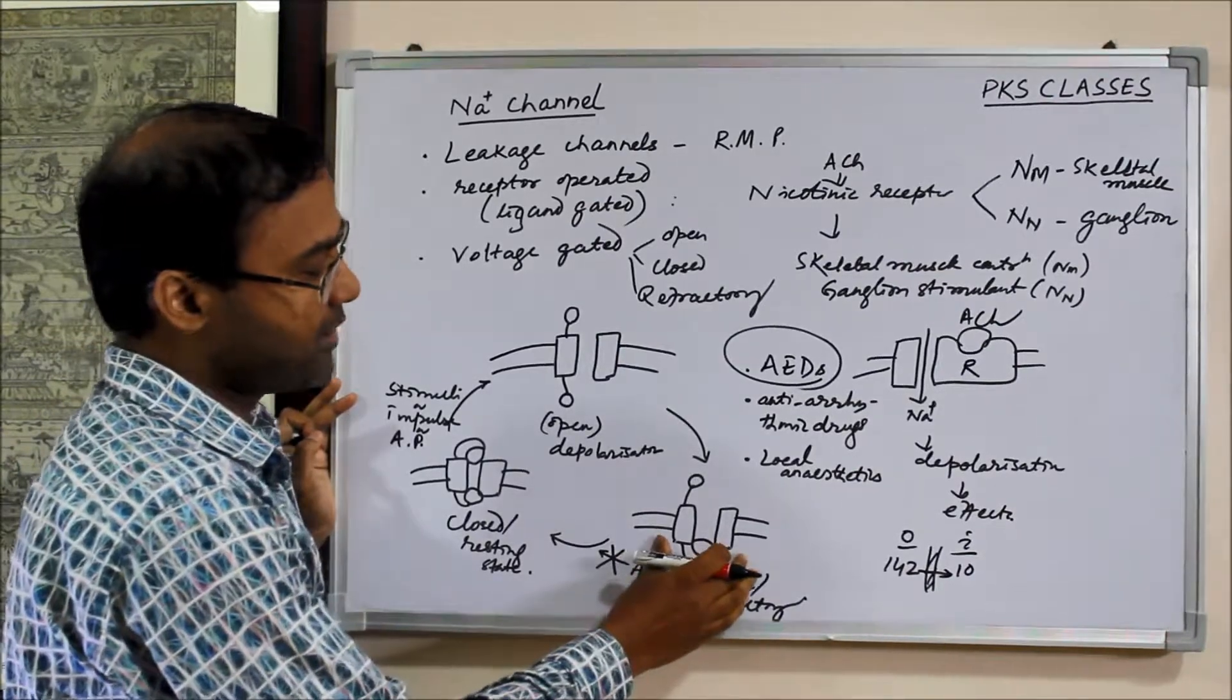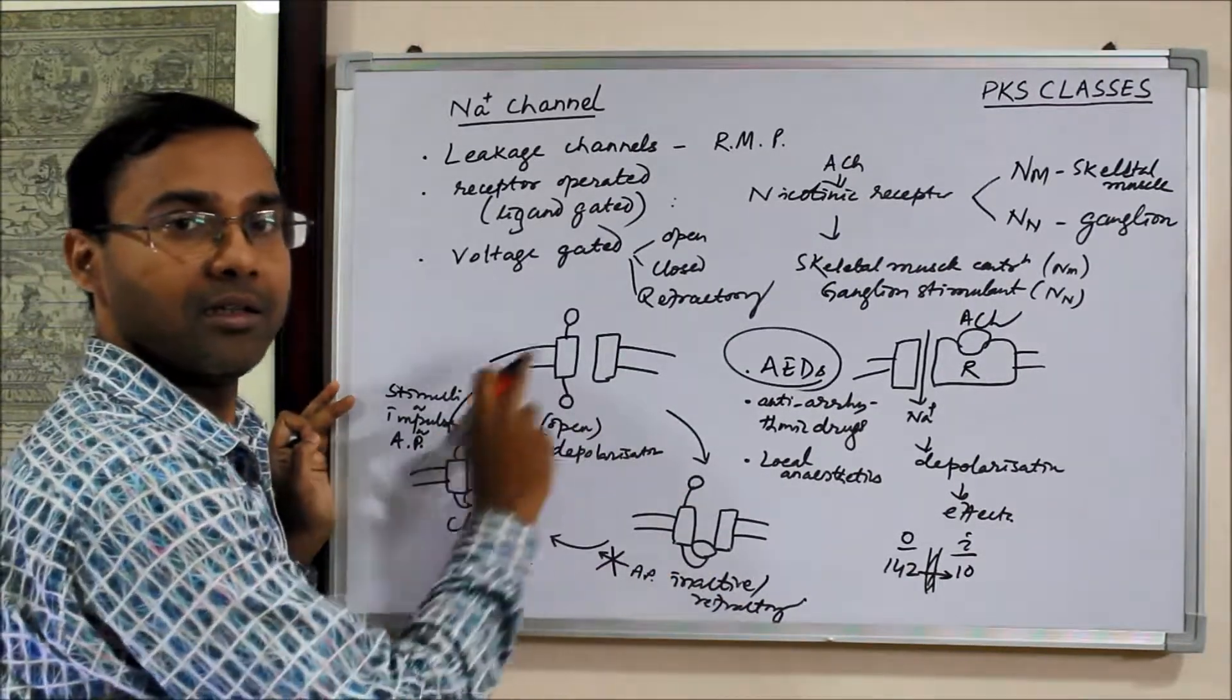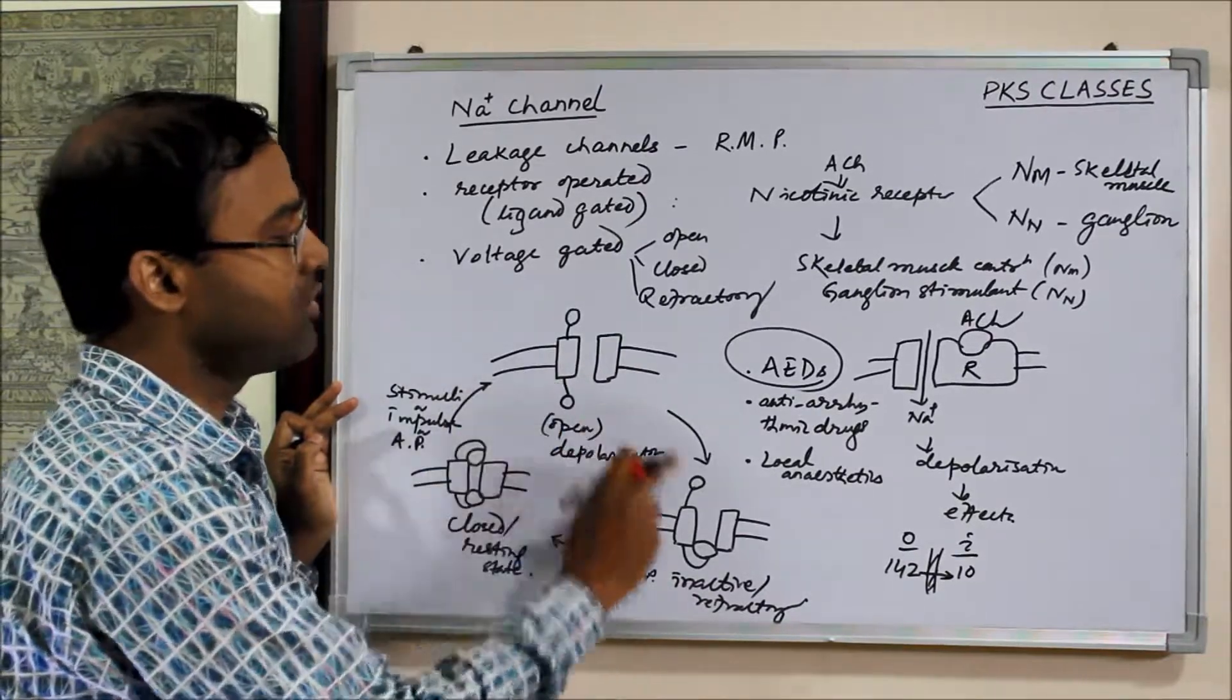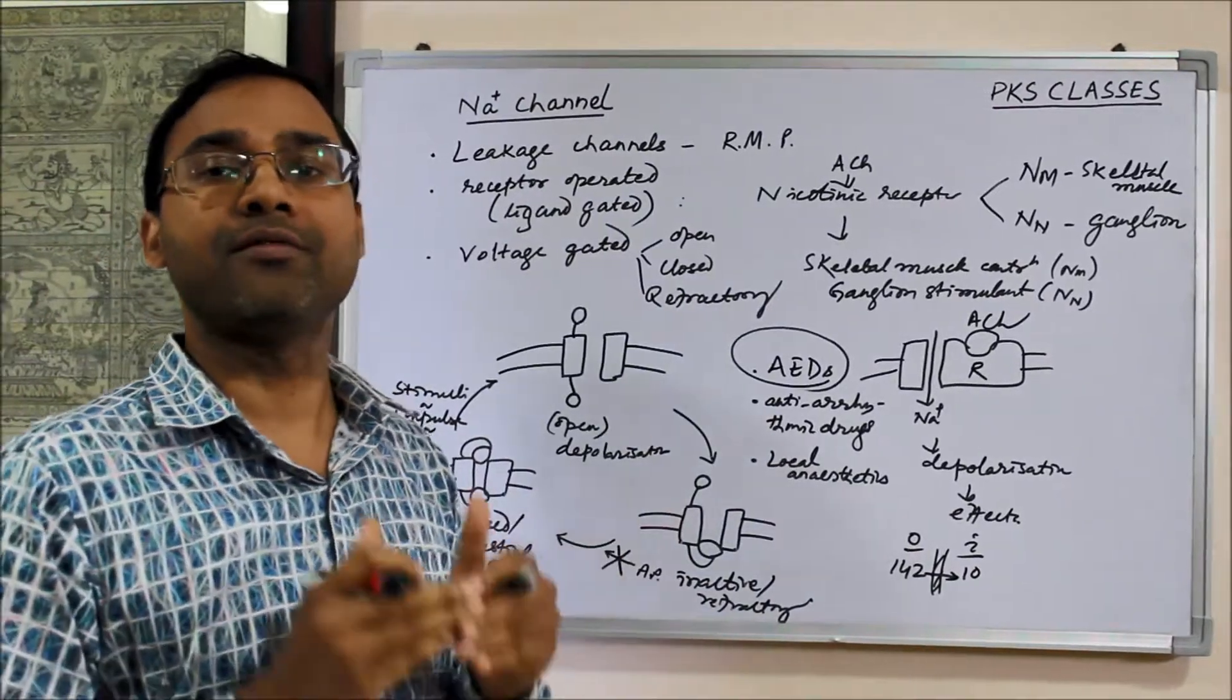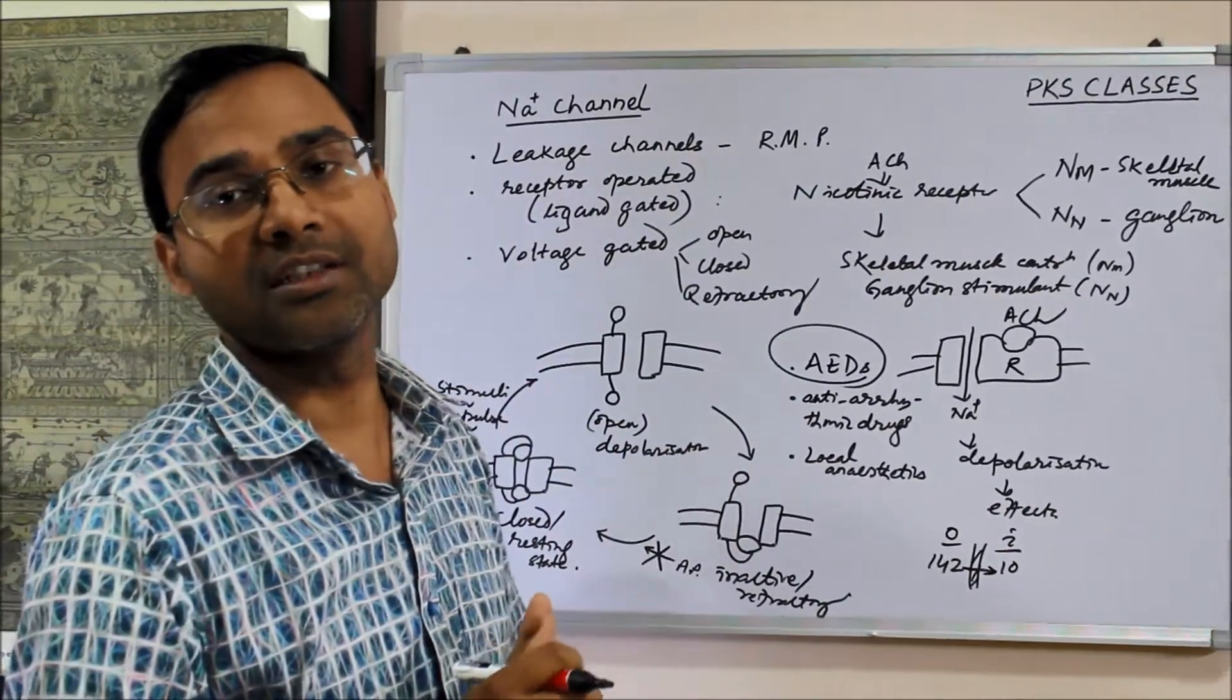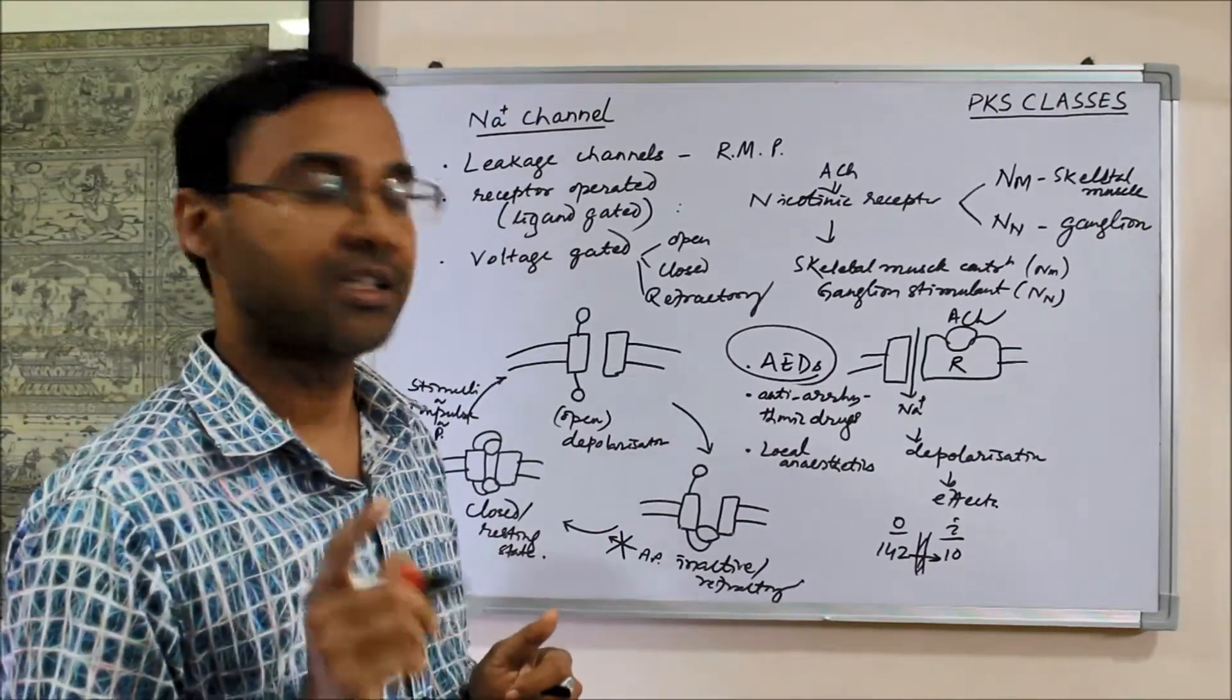If for some reason, this state is diminished or decreased, then what happens? Quickly this cycle is repeated. If the cycle is repeated quickly, that means in unit time, number of impulse discharges will be more. That leads to high frequency discharges.